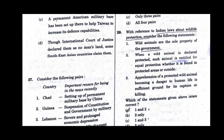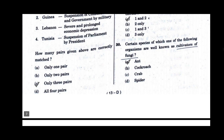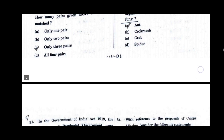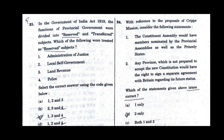Question number 29. With reference to Indian laws about wildlife protection, consider the following statements. Which of the statements given above are correct? Option A will be the correct answer: statements 1 and 2 are correct for question number 29. Question number 30. Certain species of which of the following organisms are well known as cultivators of fungi? Option A will be the correct answer. Question number 31. Option C will be the correct answer: 1, 3 and 4.